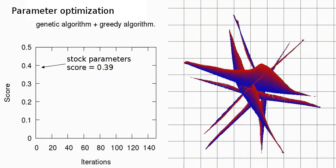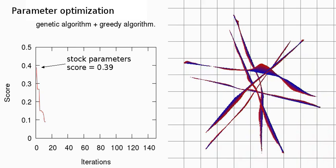In the framework we've also implemented a few optimization algorithms. The one we prefer to use is a combination of genetic and greedy algorithms. Here's an example of such an optimization using the difference metric.